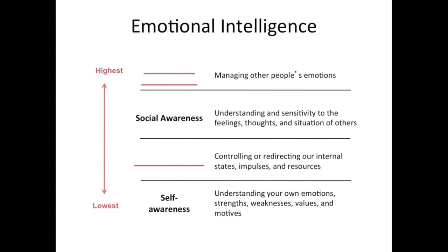Emotional intelligence is somewhat a fuzzy construct — we're still not entirely sure what it is, measuring instruments have psychometric issues, and it may be a misnomer since true intelligence is largely innate while EI is largely learned. Still, EI ranges in a hierarchy from lowest to highest ability: at the very bottom is self-awareness, then self-management, then social awareness, and at the very top, relationship management.